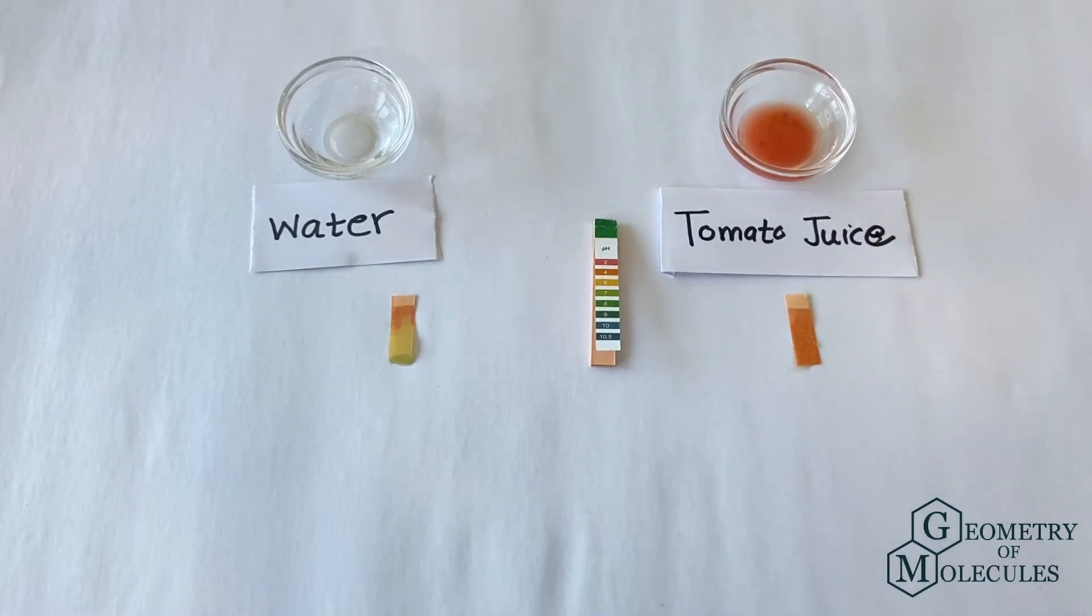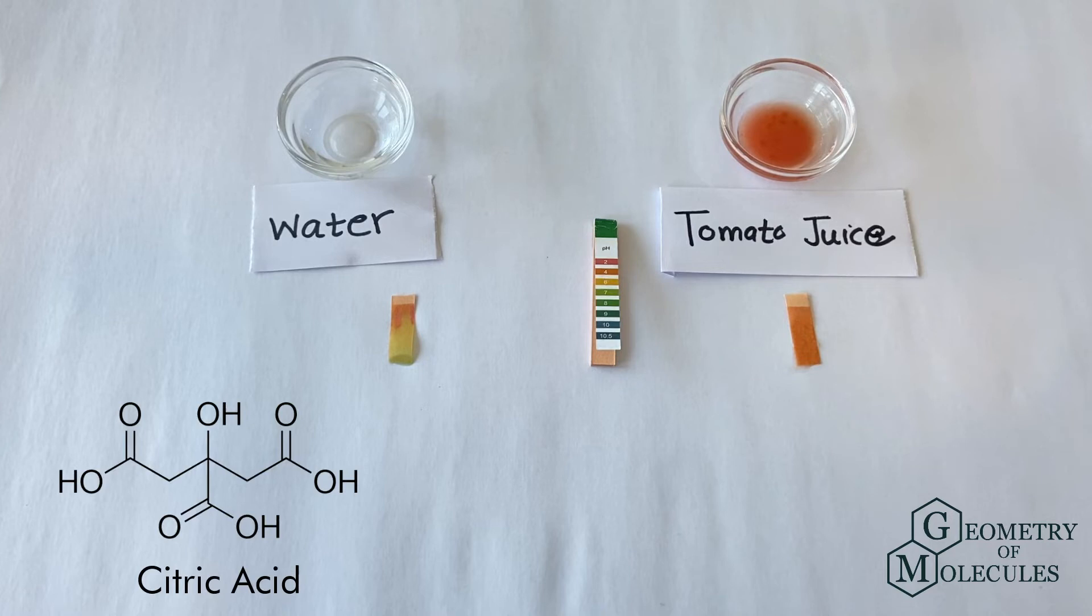Tomatoes contain more than 10 different types of acids, but the most common acids among them are citric acid and malic acid. Its structure will pop up on screen somewhere here.